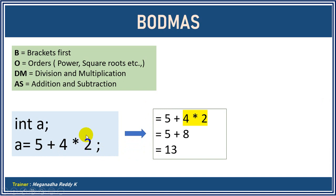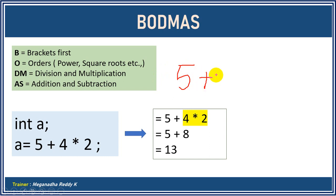Now let's evaluate the same expression in Eclipse IDE to verify. BODMAS stands for Brackets first, then Orders like powers and square roots. For example, consider an expression like 5 + 2² * 4.